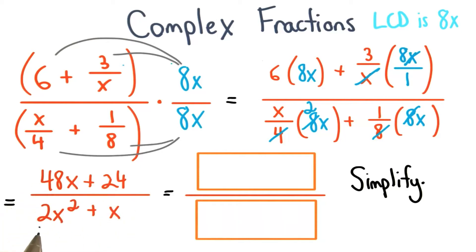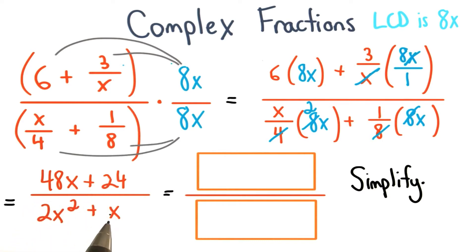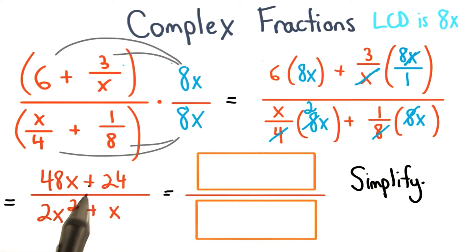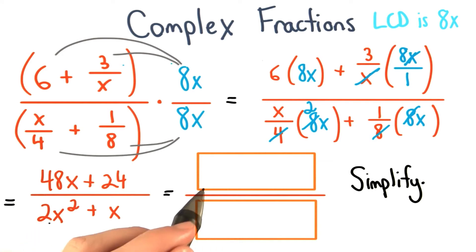Now, this is something we're familiar with again. It's just a rational expression. We don't have any fractions in the numerator and denominator. We just have a polynomial here and a polynomial here. So, use your knowledge of simplifying rational expressions to figure out the simplified form. What do you think is our final answer?